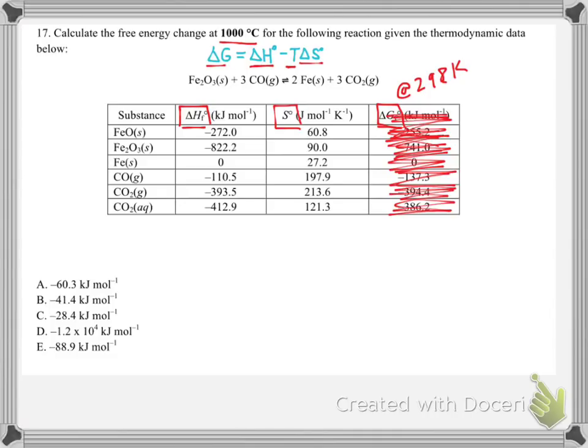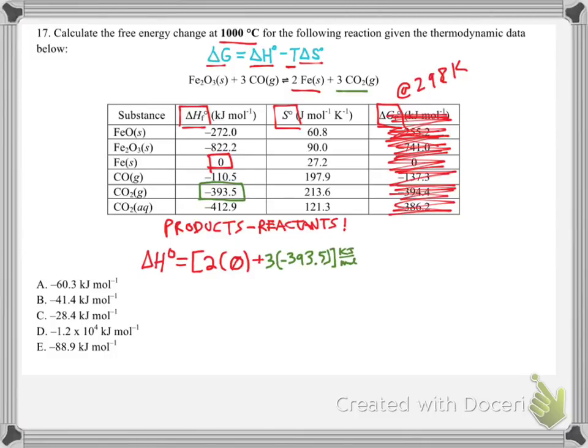First, let's solve for the enthalpy change using the products minus reactants rule. So first, let's do the enthalpy. The delta H standard of the reaction is going to be equal to the enthalpy change of the products, which is 2 moles of iron, which has a standard enthalpy of formation of 0 kJ per mole, plus 3 times the enthalpy of formation of carbon dioxide gas, which is negative 393.5 kilojoules per mole. So there we have our products, and then we'll do minus reactants. So first let's look at the iron oxide. So we have negative 822.2 plus three times the enthalpy of formation of carbon monoxide, which is negative 110.5 kilojoules per mole. So then when we compute this all together, we're going to get that the enthalpy change is negative 26.8 kilojoules per mole. So that's exothermic.